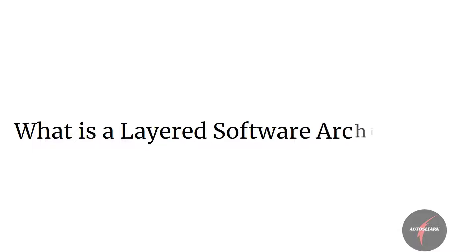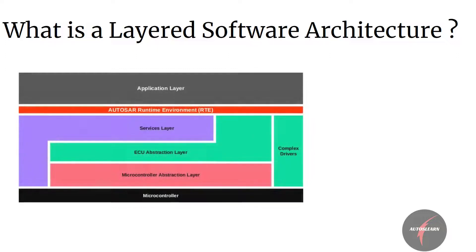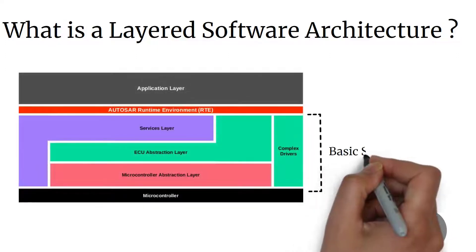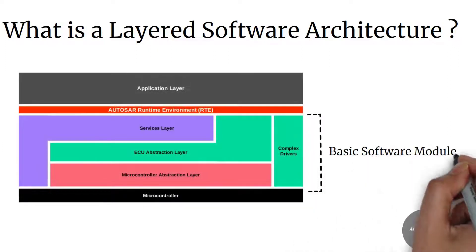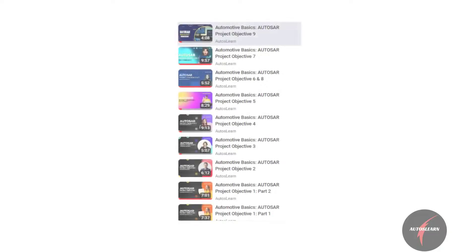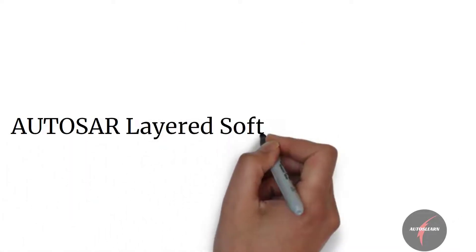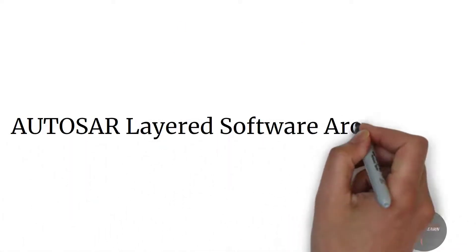What is layered software architecture? It's a hierarchical structuring of AUTOSAR software with the basic software module mapped to different software layers. After looking into all the project objectives of AUTOSAR, let's now look a bit deeper into the layered software architecture of AUTOSAR.